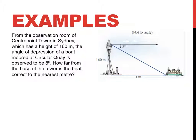This one's going to become more apparent. It says, from the observation room of Centrepoint Tower in Sydney, which has a height of 160 m, the angle of depression of a boat moored at Circular Quay is observed to be 8 degrees. How far from the base of the tower is the boat, correct to the nearest metre?